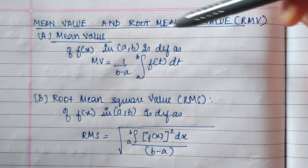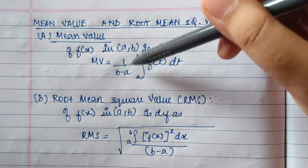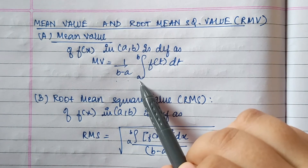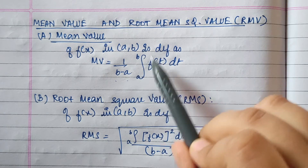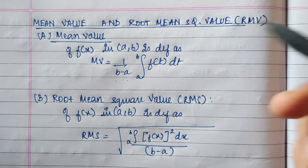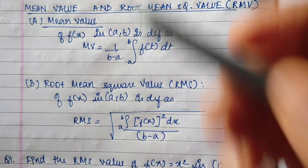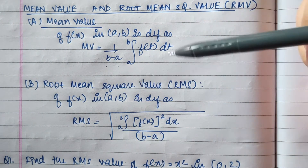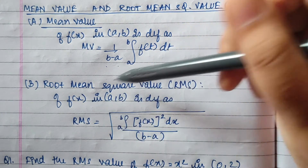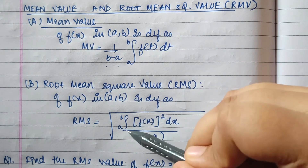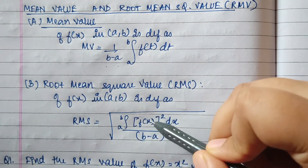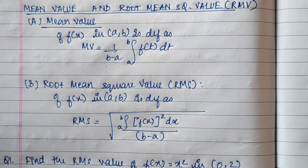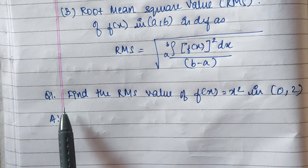The mean value of a function f(x) in the interval [a, b] is defined as MV = (1 / (b − a)) × the definite integral from a to b of f(t) dt. The root mean square value (RMS) of the function in the interval [a, b] is defined as RMS = square root of the definite integral from a to b of [f(x)]² dx, divided by (b − a).